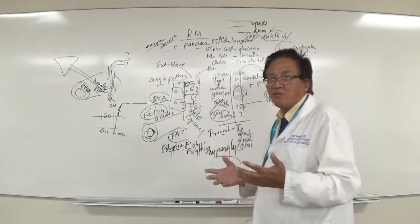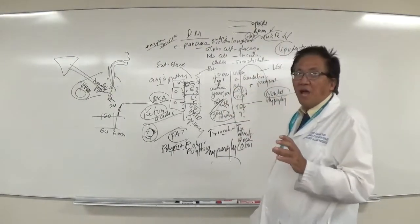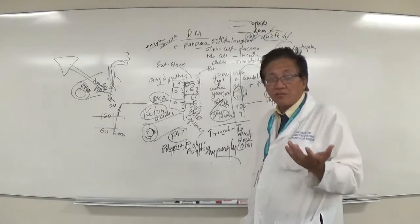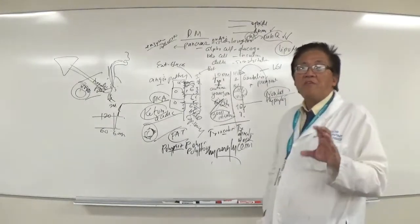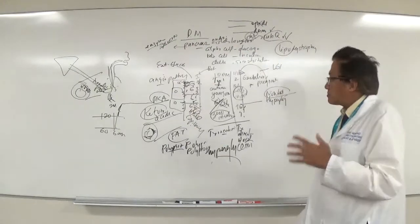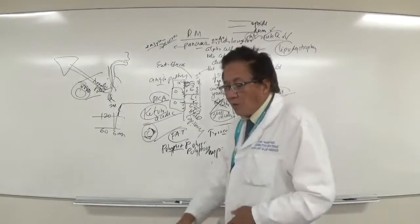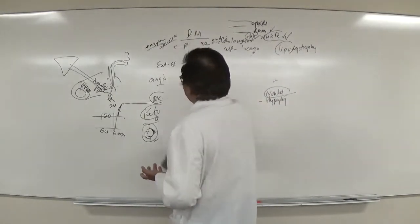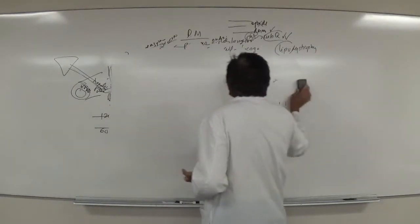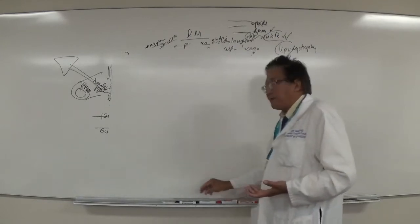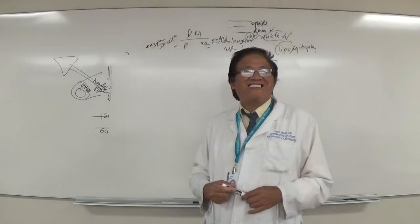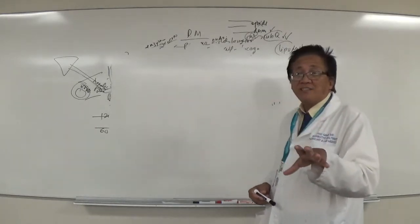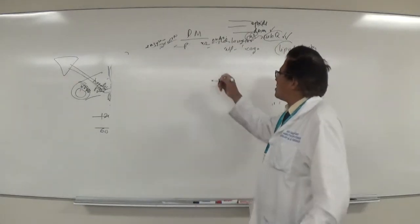Diabetes is a common illness that will likely appear on the nursing board exam, including questions on foot care. Now moving on to Cushing's and Addison's disease. The organ involved is the adrenal gland, which has two parts: the adrenal cortex and the adrenal medulla. The cortex produces two main hormones.